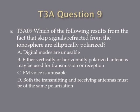Question 9: Which of the following results from the fact that skip signals refracted from the ionosphere are elliptically polarized? A. Digital modes are unusable. B. Either vertically or horizontally polarized antennas may be used for transmission or reception. C. FM voice is unusable. Or D. Both the transmitting and receiving antennas must be of the same polarization.